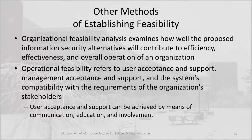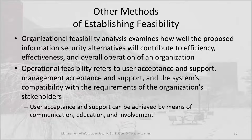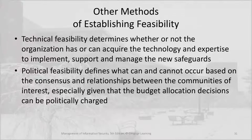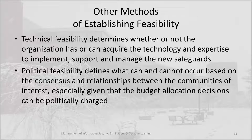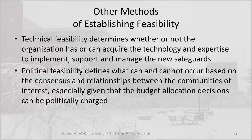Organizational feasibility analysis examines how well the proposed information security alternatives will contribute to efficiency, effectiveness, and overall operation of an organization. Operational feasibility refers to user acceptance and support, management acceptance and support, and the system's compatibility with the requirements of the organization's stakeholders. User acceptance and support can be achieved by means of communication, education, and involvement. Technical feasibility determines whether or not the organization has or can acquire the technology and expertise to implement, support, and manage the new safeguards. Political feasibility defines what can and cannot occur based on the consensus and relationships between the communities of interest, especially given that budget allocation decisions can be politically charged.